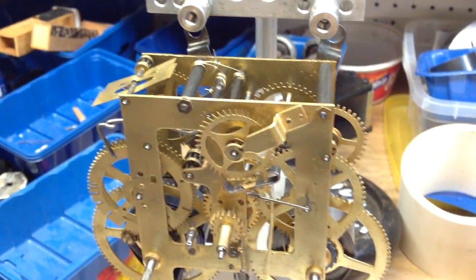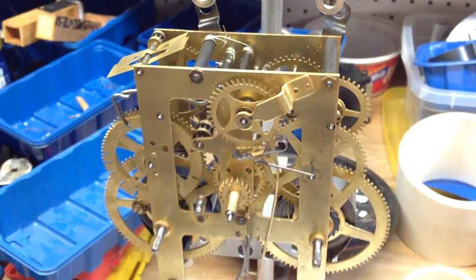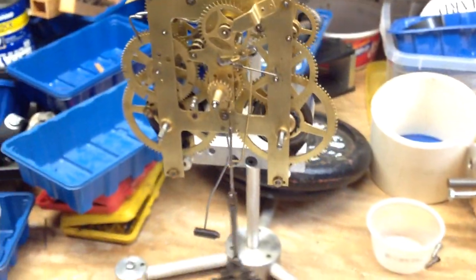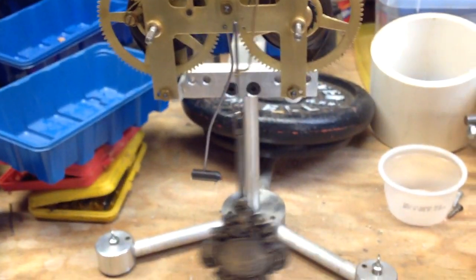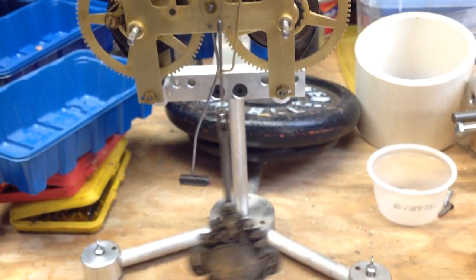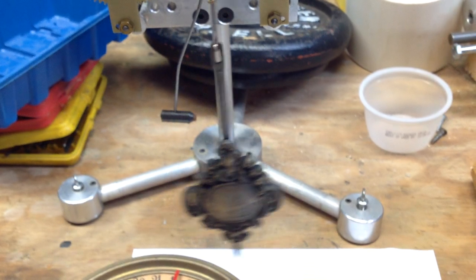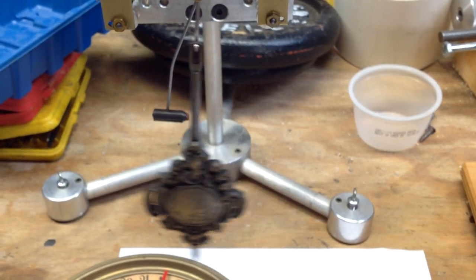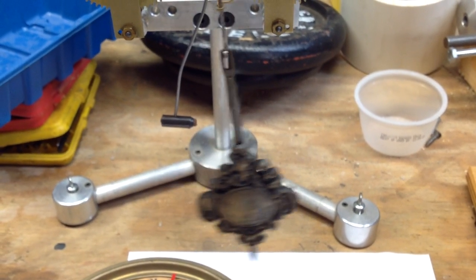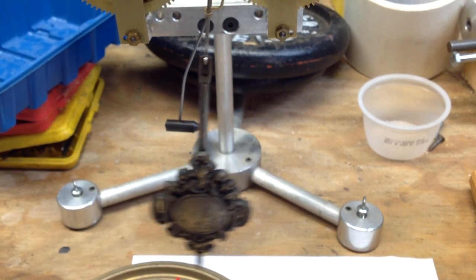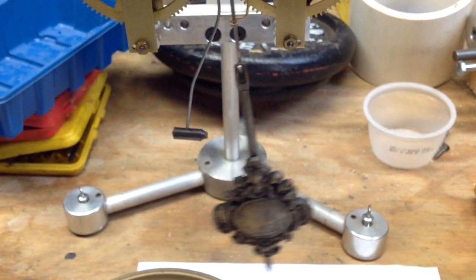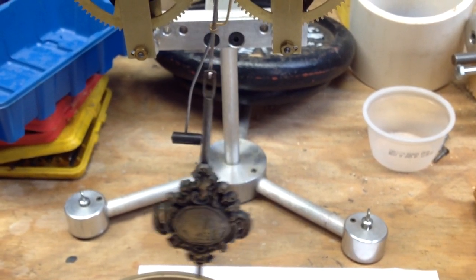The strike side just went into warning which means that in a couple minutes it's going to strike. The hammer down here, the head of the hammer off to the left has a little piece of leather in it and that was kind of worn out. So I took that over to the drill press and drilled out the old piece of leather and replaced it.